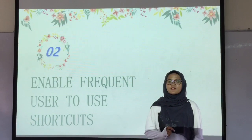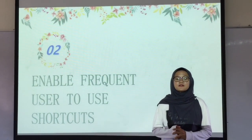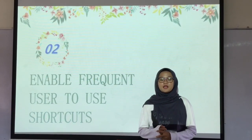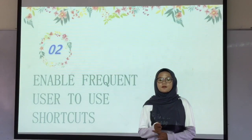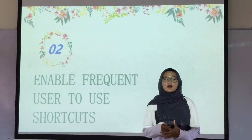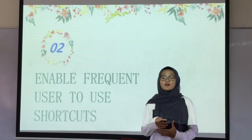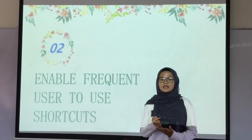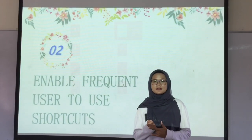Rule No. 2: Allow frequent users to use shortcuts. If folks are familiar with the item, make it easy for them to accomplish their objective. With increased use comes the demand for quicker methods of completing tasks. For example, both Windows and Mac provide users with keyboard shortcuts for copying and pasting. So as the user becomes more experienced, they can navigate and operate the user interface more quickly and effortlessly.